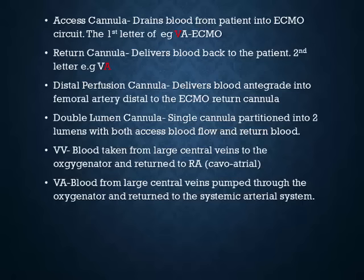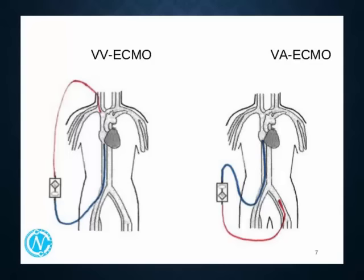In VV ECMO, blood is taken from large central veins to the oxygenator and returned to the caval atrial area. In VA ECMO, blood from large central veins is pumped through the oxygenator and returned to the systemic arterial system. The access cannula drains blood from the IVC — denoted by convention in blue — goes through the pump and is returned into the superior vena cava.